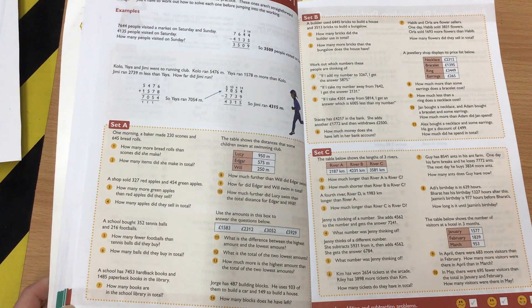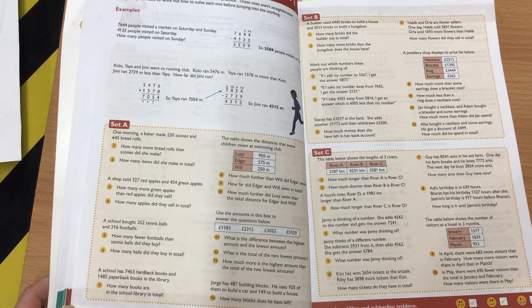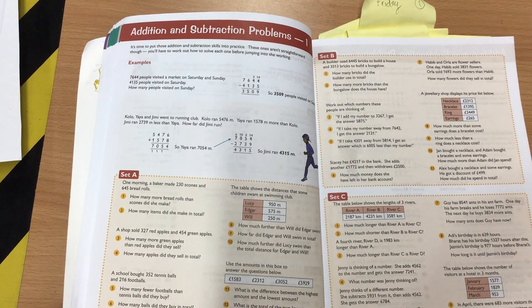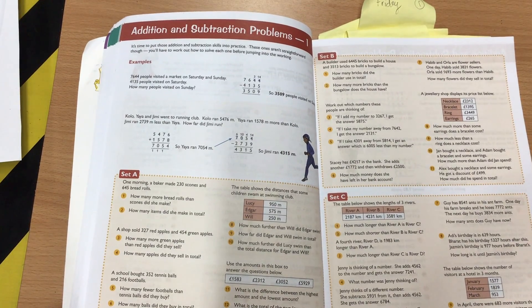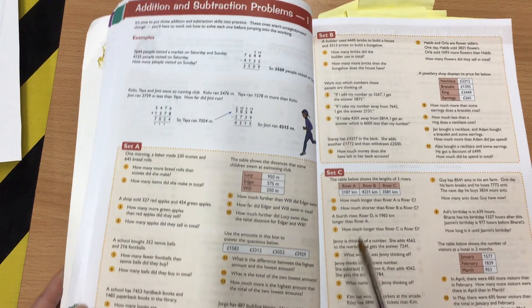Good morning, Year 4. For today's maths task, you're going to be looking at pages 36 and 37. These are really lovely pages because this is putting together everything you've learned about addition and subtraction in the past week. And we're now going to be looking at word problems.